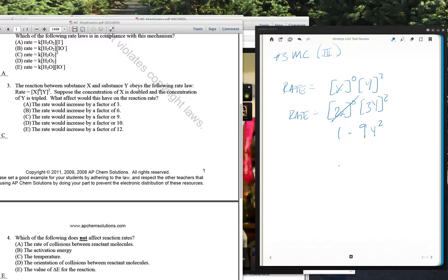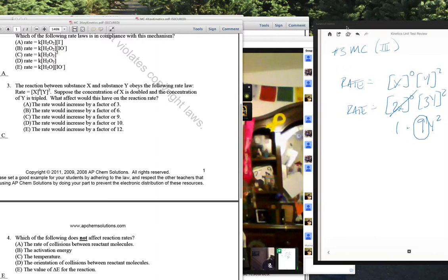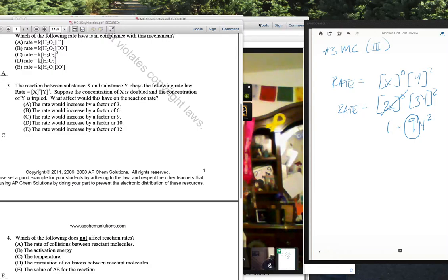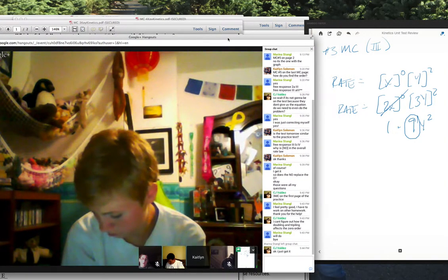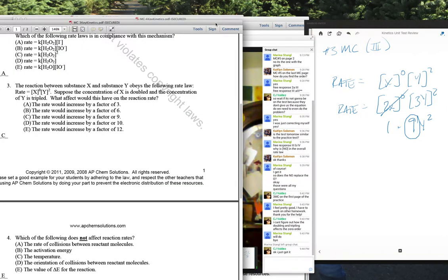So, we have a rate law. This is number three. Multiple choice. We have a rate law that says rate is equal to concentration of X to the zero power times the concentration of Y squared. And suppose that X is doubled and Y is tripled. So, rate is equal to 2X to the zero, 3Y squared. And any number to the zero power becomes 1. And this is 9Y squared. So, the overall rate is increased by a factor of 9. If it's zero, it's always to the one power. Like, you don't even have to include it in the rate law. Okay. Oh, CJ, you got it. Okay. Sounds bueno. Any other questions?